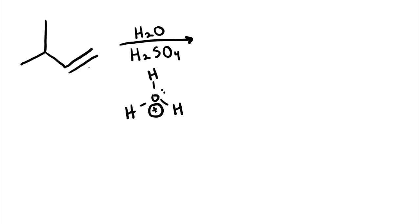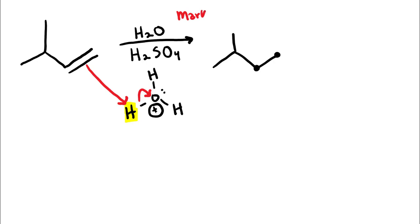The first arrow is going to be between the double bond and the hydrogen. So the double bond is going to attack the hydrogen atom, and then the electrons between the hydrogen and the oxygen are going to go back to the oxygen. The first decision we have to make is to which side of where the double bond used to be are we going to add our hydrogen atom. We can either add it to the left side or to the right side, and in order to know where, we have to remember Markovnikov addition.